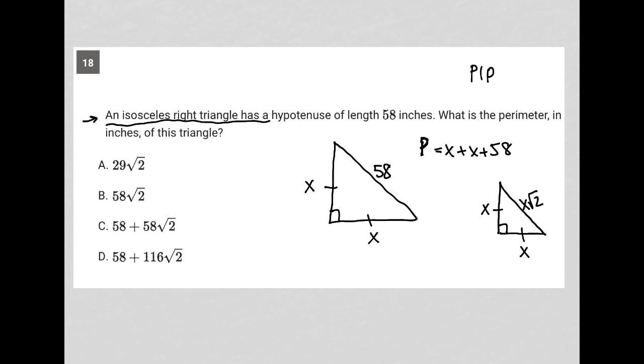So what I like to do is whenever I see a match between what I know to be true and what I have in my generic right triangle, I just set them equal to each other. Basically, this is saying that x root 2 must be equal to 58. Like these are the corresponding sides.